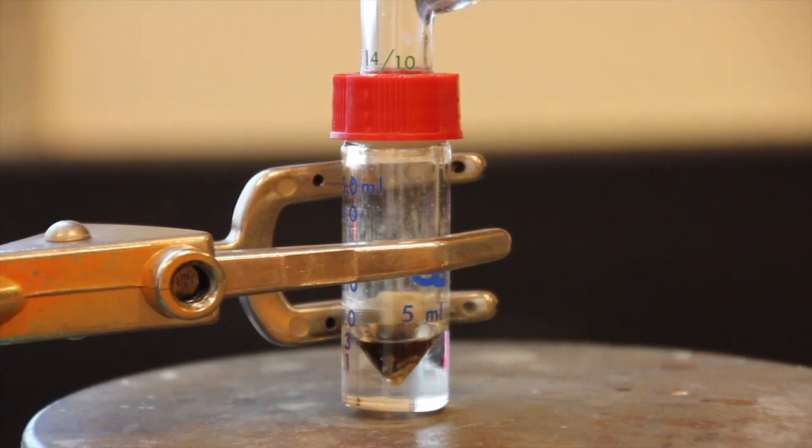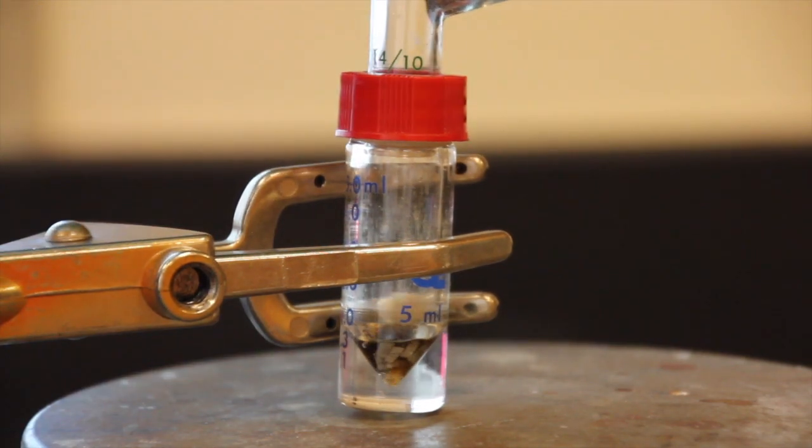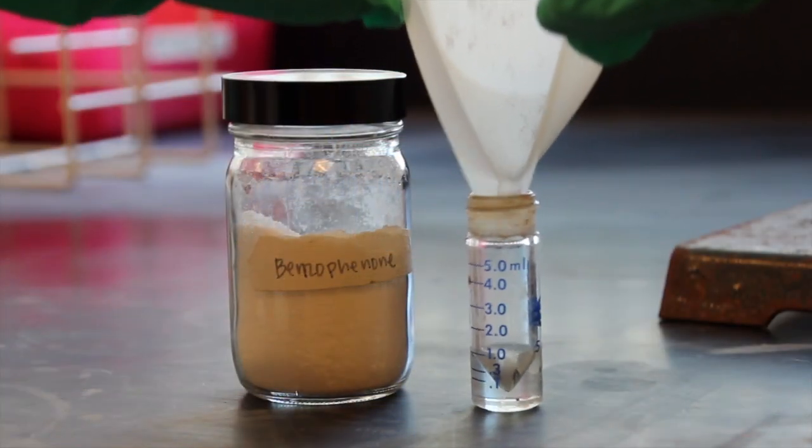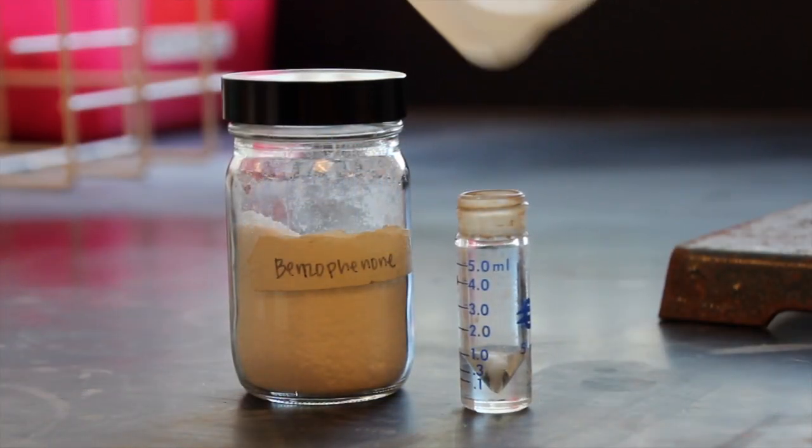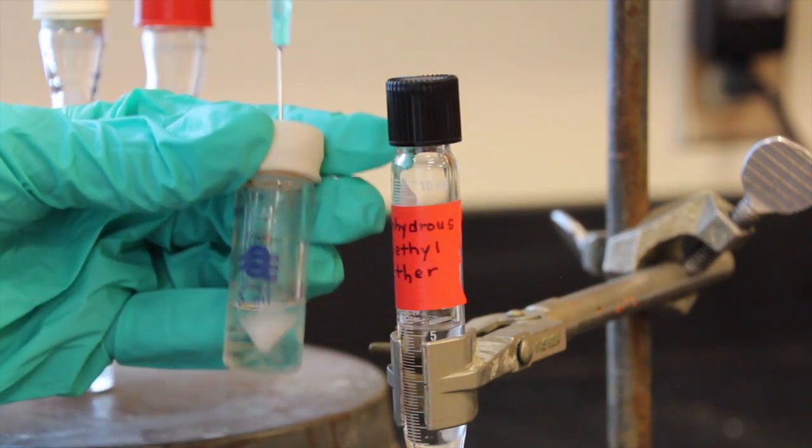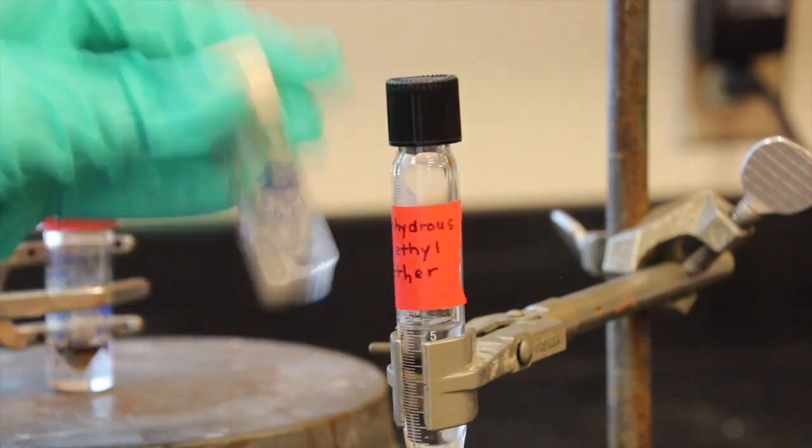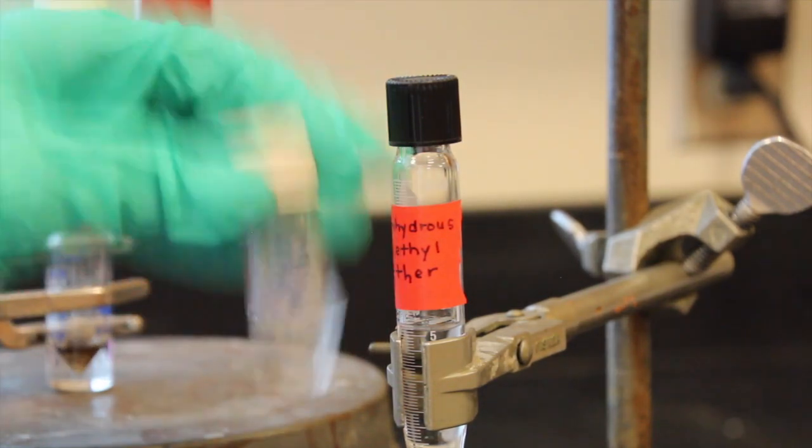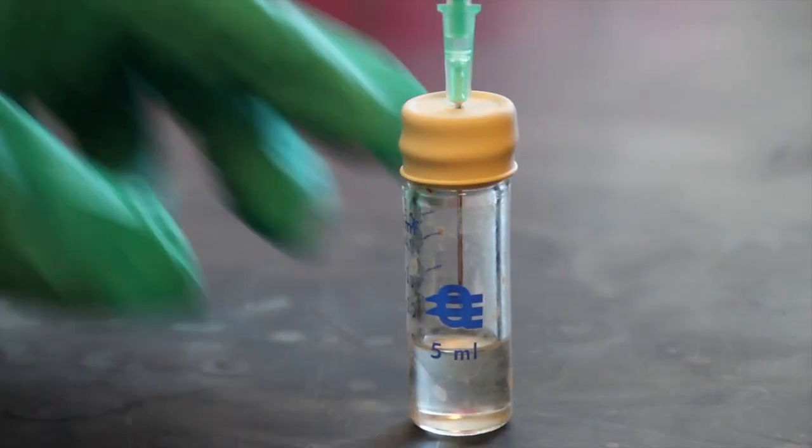After it is cooled, your Grignard reagent is ready for the synthesis of triphenylmethanol. Begin by preparing a solution of 0.27 grams of benzophenone and 0.5 milliliters of anhydrous ether. Cap the vial and shake to dissolve all of the benzophenone. Keep the vial capped until the Grignard reagent has been prepared and cooled to room temperature.